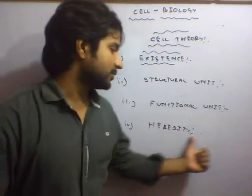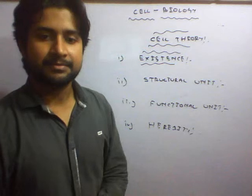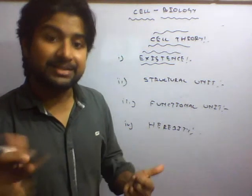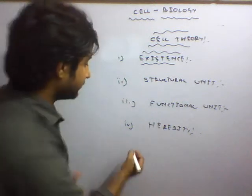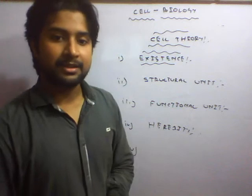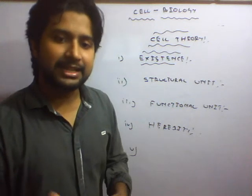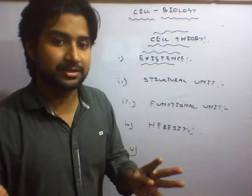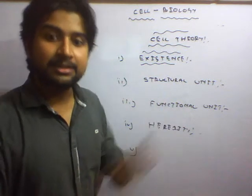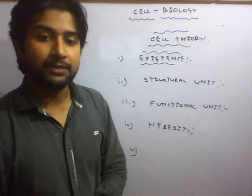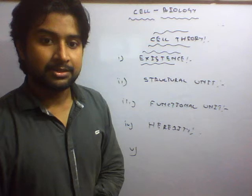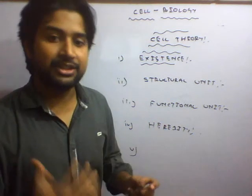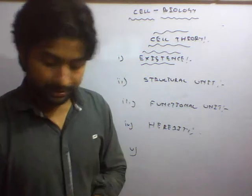The fourth point is heredity — the transfer of genetic characters from parent to offspring — and cells have that capability. The fifth point is that all metabolic processes occurring inside a cell are similar in each and every cell, and nearly all cells are similar in structure. These are the five statements of cell theory as described by Schleiden and Schwann.